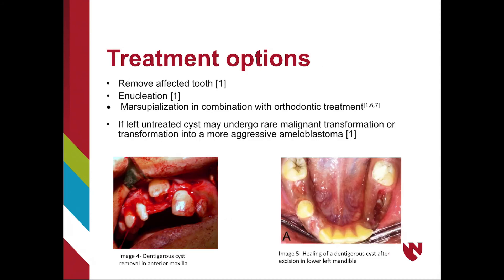There are a few treatment options for a dentigerous cyst. Removal of the affected tooth, enucleation, or marsupialization in combination with orthodontic treatment are all possible treatments. It is not indicated to leave the cyst untreated because it may undergo malignant transformation or transform into a more aggressive ameloblastoma.